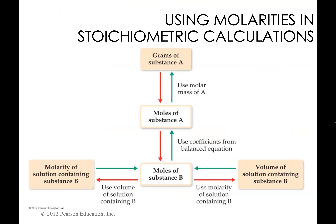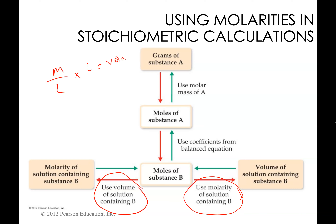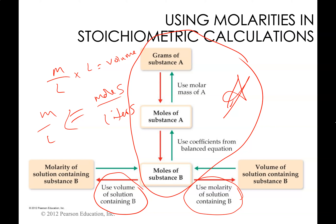For stoichiometry with solutions: to go from molarity to moles, multiply molarity by volume in liters. To go from moles to volume, divide moles by molarity. If you have moles per liter and multiply by liters, you get moles. To get from moles to grams, use molar mass as usual — that's straight stoichiometry. The only new addition to the chart is how to interpret and use molarities.